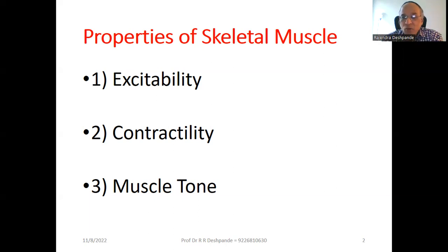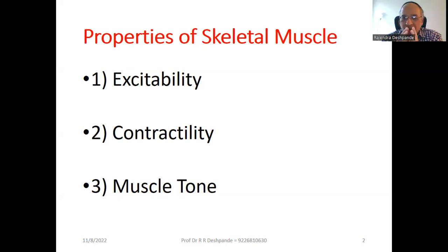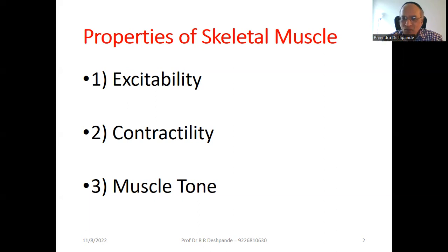The first property is excitability. Number two, contractility. And number three, muscle tone. You must know at minimum these three — excitability, contractility, and muscle tone — because this will be asked for 3 marks, with 1 mark for each.